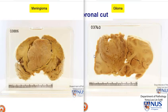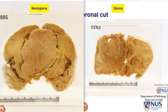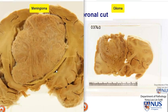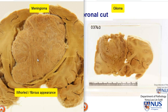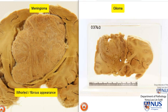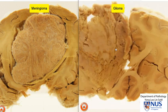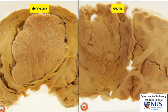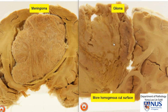Here we have a side-by-side comparison showing an example of a meningioma. You can see that it's very much more sharply demarcated from the rest of the brain and also it has a different appearance on the cut surface. It is somewhat browner and it's got these pale areas with almost a whorled appearance or texture on the cut surface, as opposed to this glial tumour, which is much more ill-defined and has a more homogeneous cut surface.